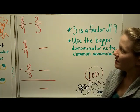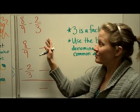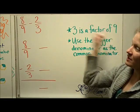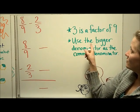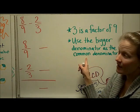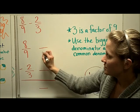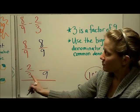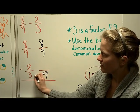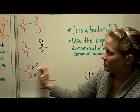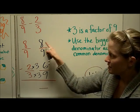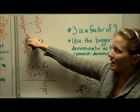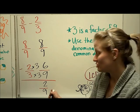Let's do one final subtraction problem: eight-ninths minus two-thirds. You might notice the shortcut — three is a factor of nine because three times three is nine, so I can use nine as the common denominator for both. The eight-ninths fraction doesn't have to change. For two-thirds, how do I get from three to nine? Times three. Two times three is six. Now I subtract: eight minus six is two, keeping the denominator nine. So eight-ninths minus two-thirds equals two-ninths.